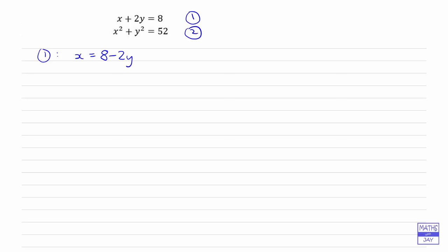We've subtracted 2y from both sides of that equation. We've got a new equation, so let's give that a new number, equation 3.